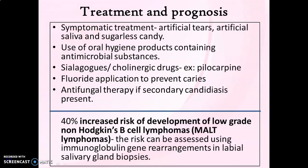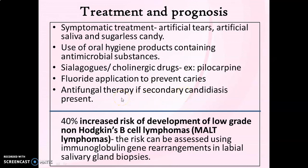Treatment of Sjögren's syndrome is usually symptomatic. For xerophthalmia, artificial tear secretion is provided. To relieve xerostomia, artificial saliva, salivary substitutes, and sugarless candy can be given to stimulate salivary flow. Maintenance of oral hygiene is very important; oral hygiene products containing antimicrobial substances like lactoperoxidase and lactoferrin can be used. Sialogogue medications or cholinergic drugs like pilocarpine can be provided to increase salivary flow. Fluoride application to the teeth is advised to prevent dental caries, and if secondary candidiasis is present, antifungal therapy can be initiated.